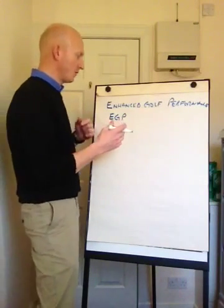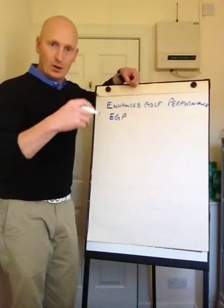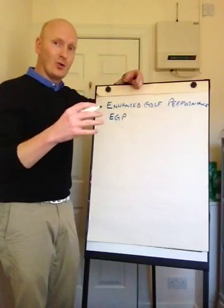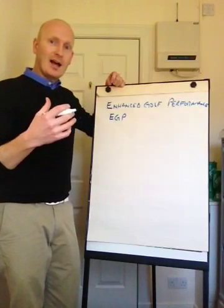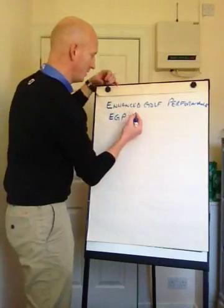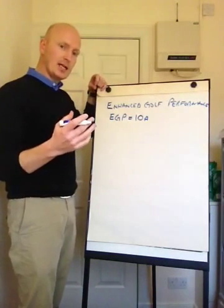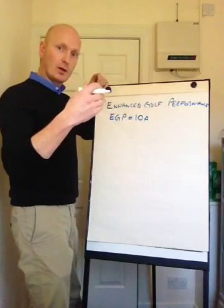The formula for enhanced golfing performance is to get things to work as a whole, create a better golfer as a whole. There's 10 aspects to the golf. So EGP equals 10A. There's 10 aspects to the golf, so we'll start from the green working back to the tee.